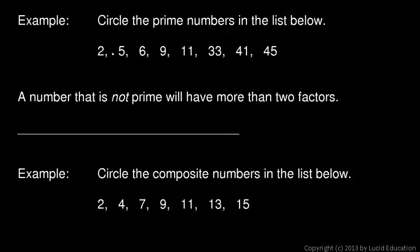Now 2 we said is prime, let's circle that, and 5 is prime. But when we get to 6, it's easy to recall that 2 times 3 equals 6. So 6 has factors other than one and itself, so it's not prime. We're not going to circle it—we're circling the prime numbers in this example.